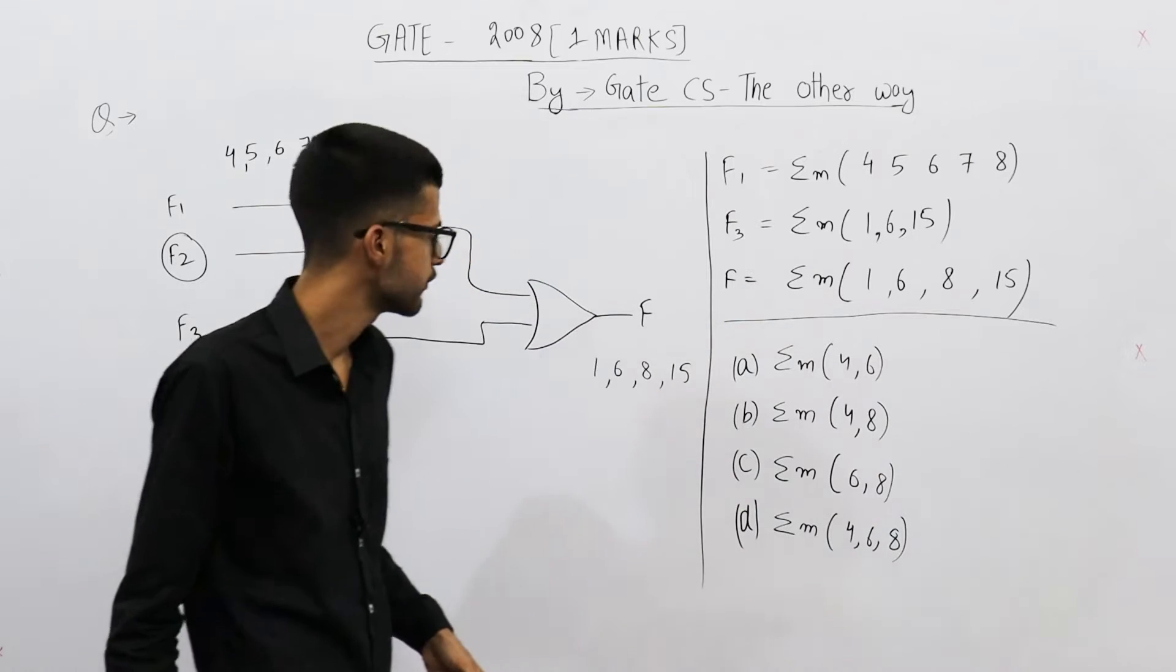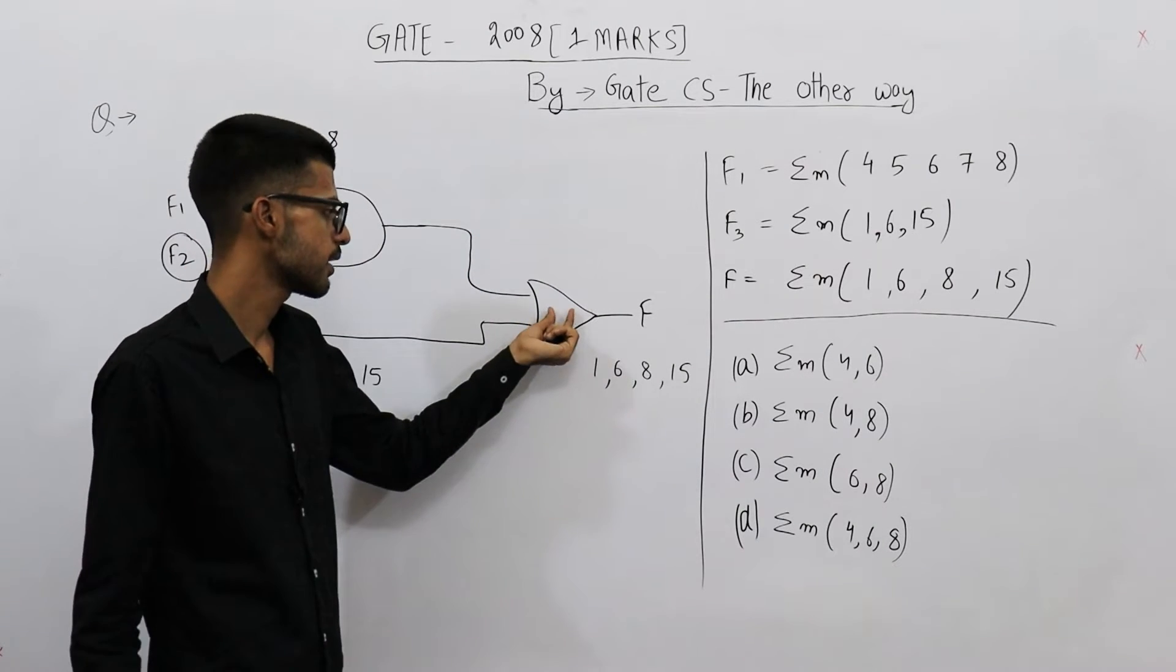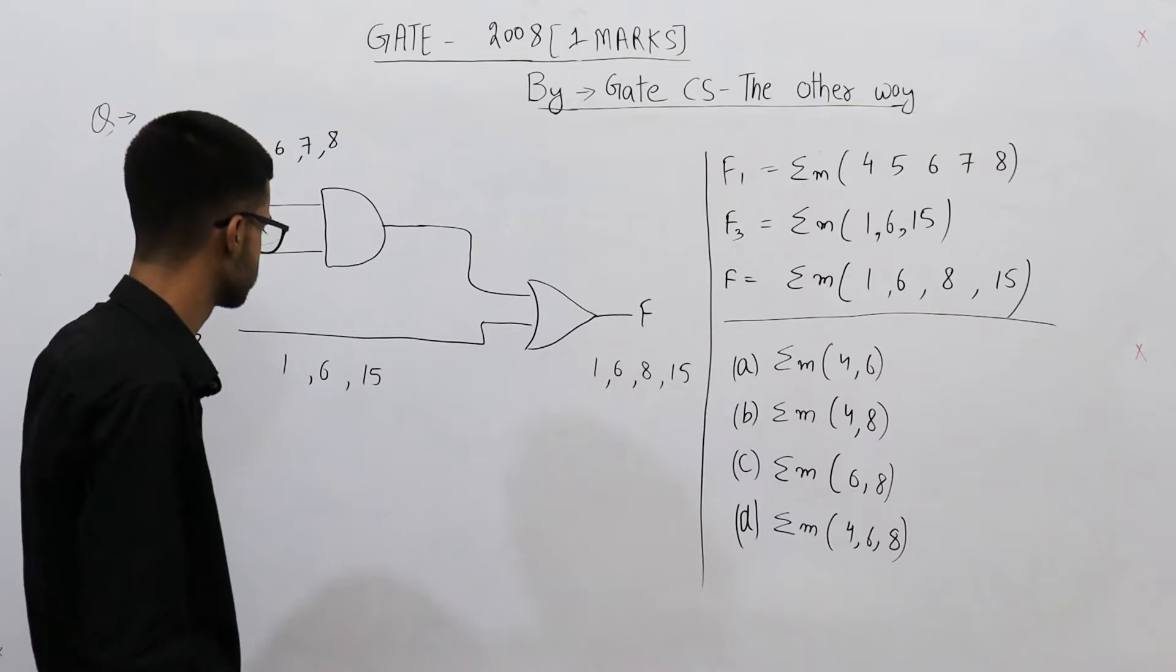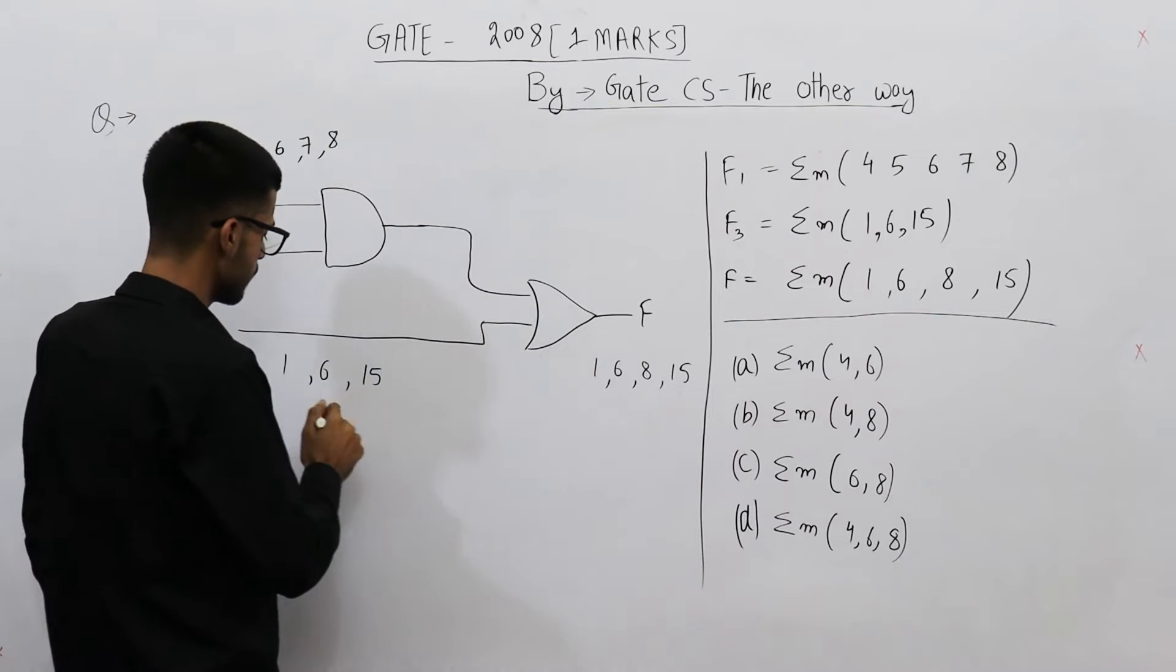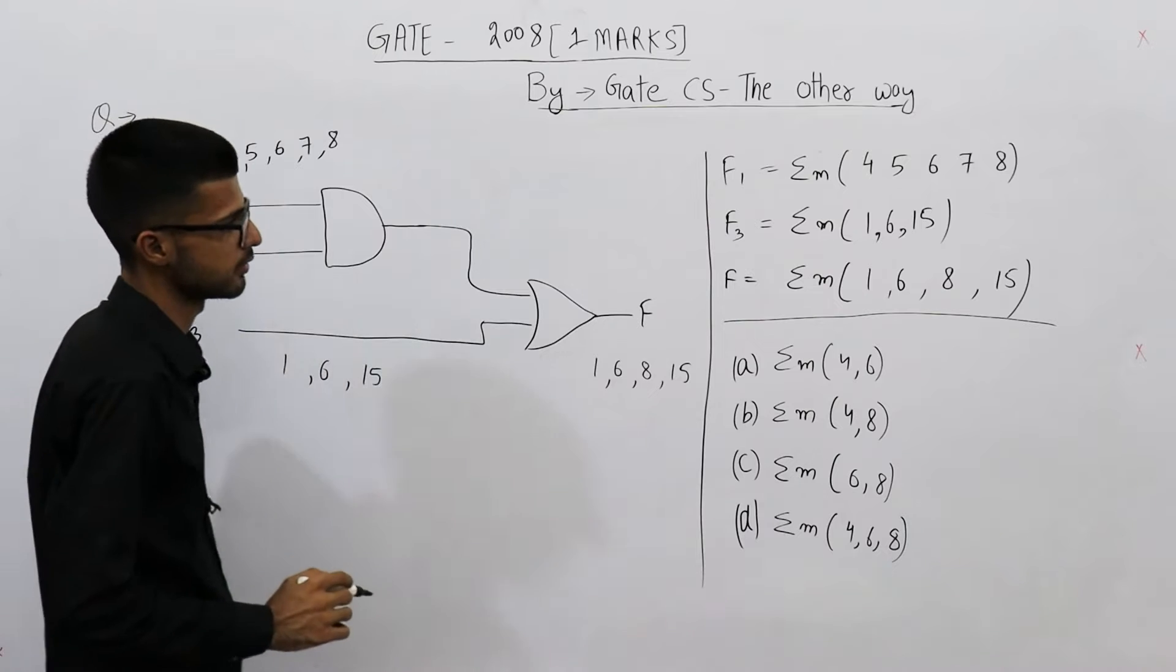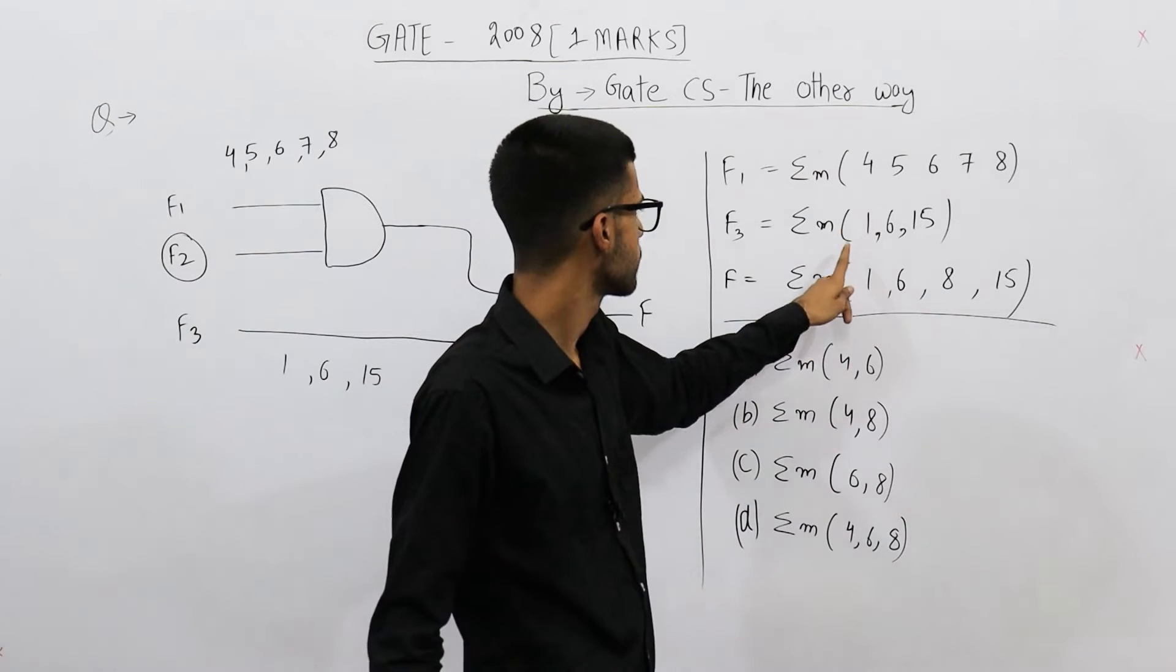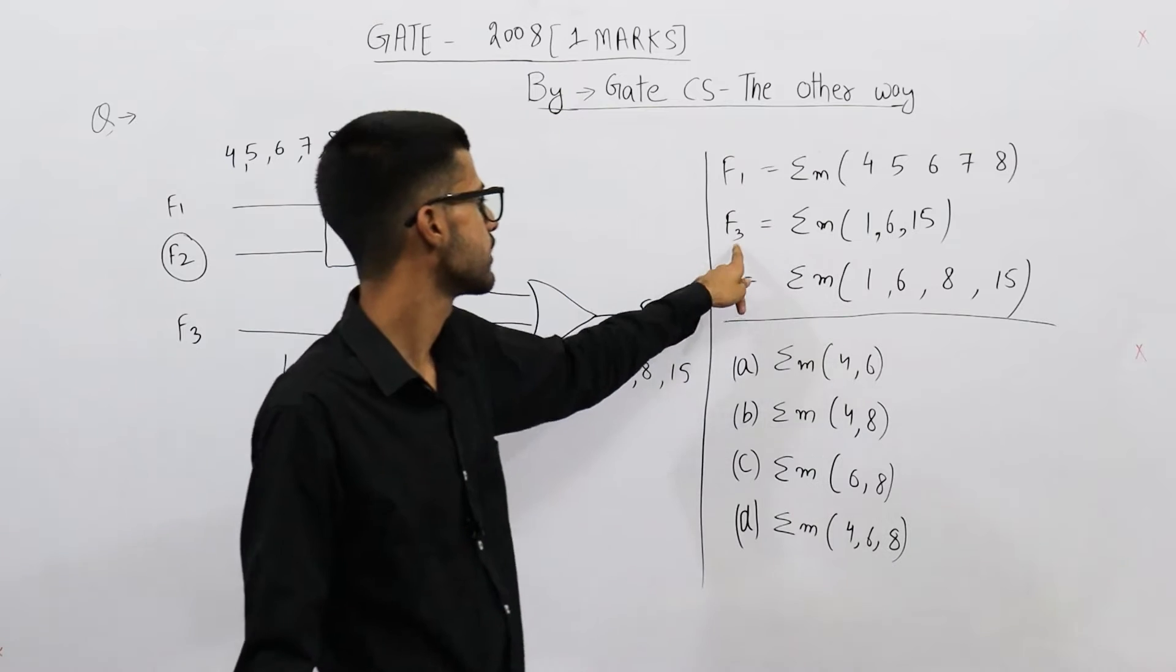So let us try to find f2. For that, let us analyze this OR gate first of all. One of its input is high on 1, 6, and 15. See, these are the minterms: 1, 6, and 15.